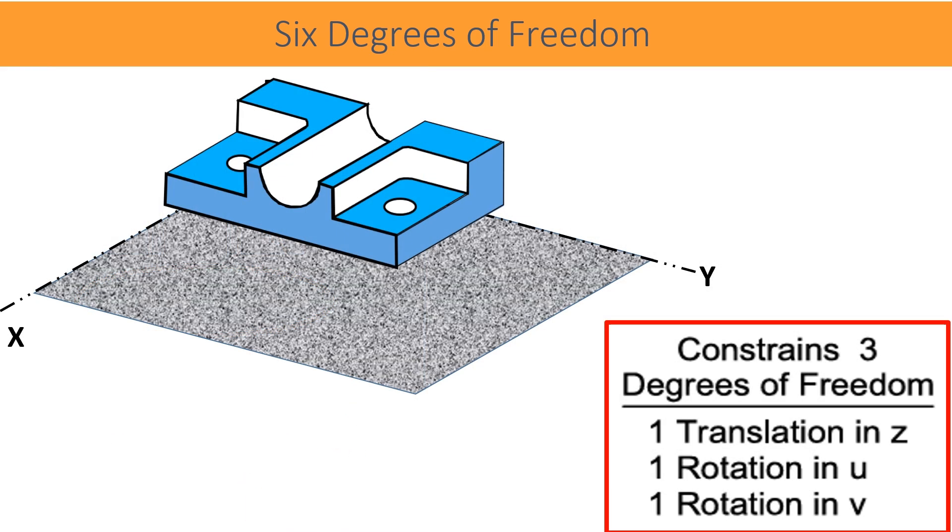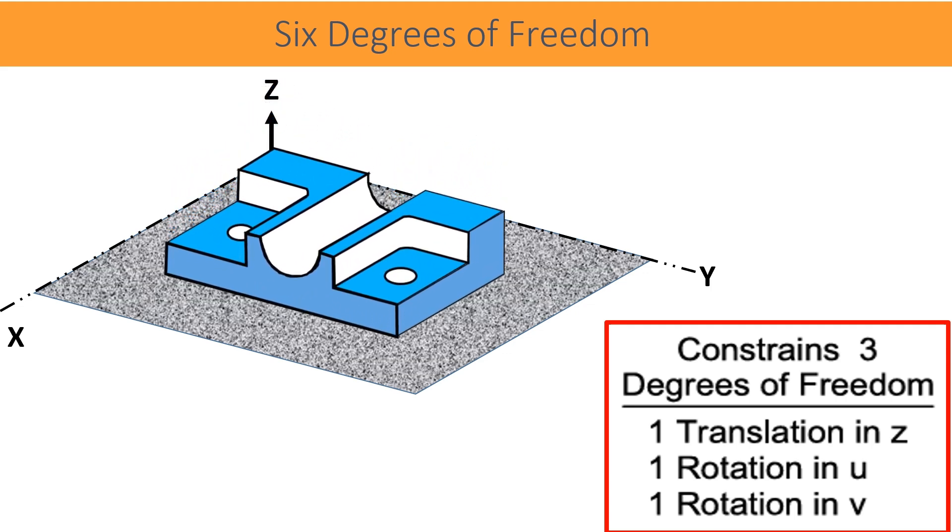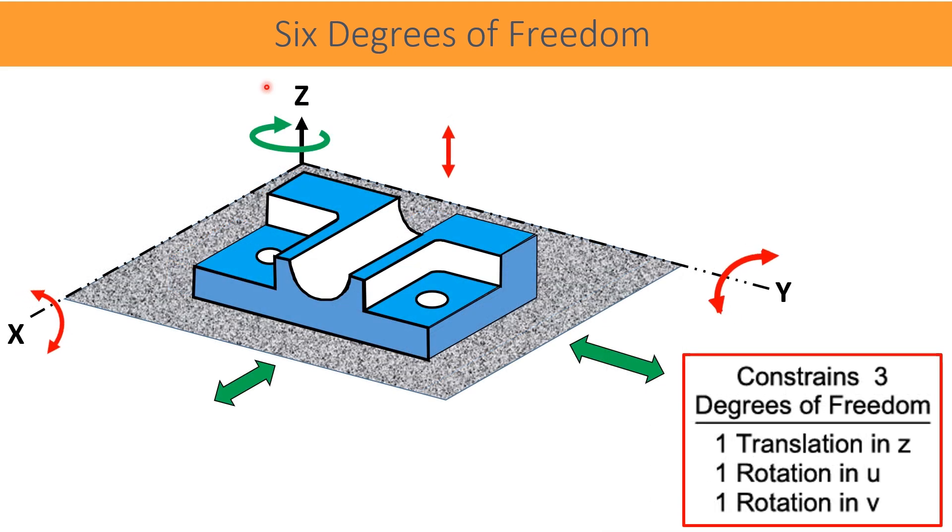Here, datum D is established with a datum simulator. Primary datum D created a Z-axis. There, three degrees of freedom are constrained: one in translation and two are in rotations.